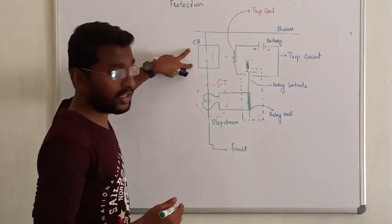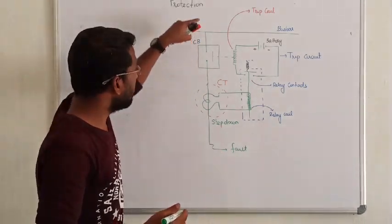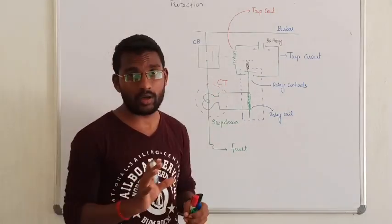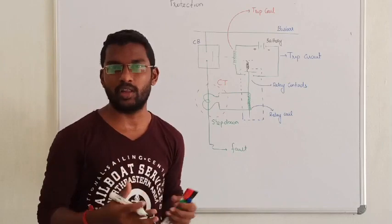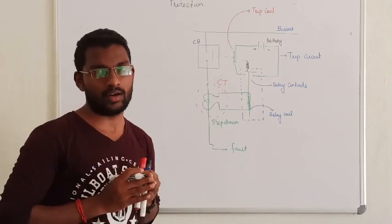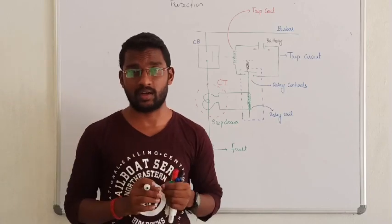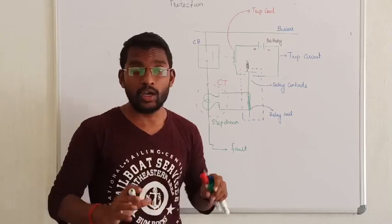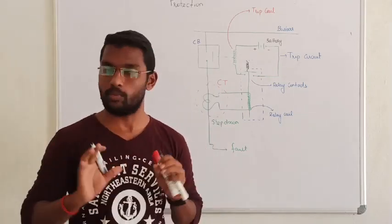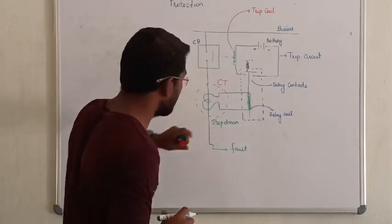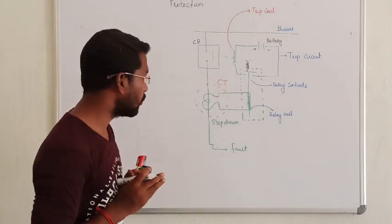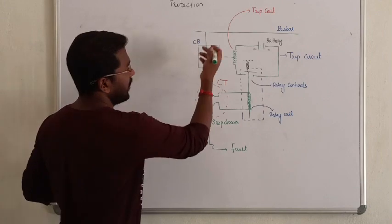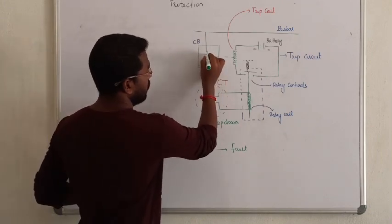What we use is this circuit breaker. If we have a transmission line, the first step-down transformer is a current transformer. If the transmission line has current flow, you contact the current flow — close flow. If you have the current flow, the transmission line will allow your current flow.